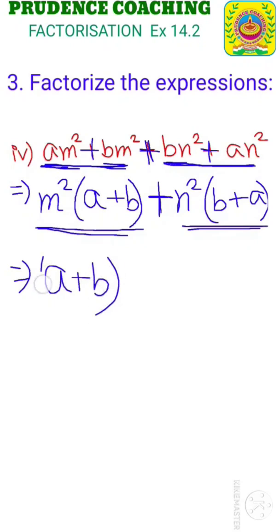As in both the terms we have a plus b. b plus a and a plus b is same. For example 2 plus 3 is 5 and 3 plus 2 is also 5. So we can take a plus b common from both the terms.